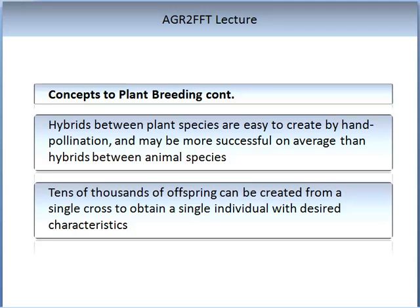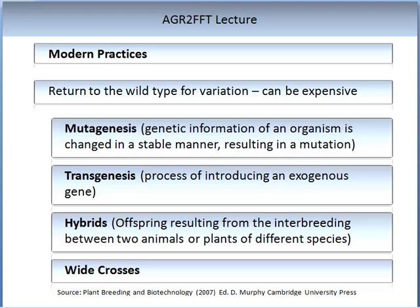Let us have a look at some of these modern practices. There isn't enough time to go into all areas of plant genetics in the detail I would like; however, we will have enough time to introduce some of these concepts. One of the first trends in recent genetics is a return to using wild type for variation — this is very time consuming and can be expensive, but does allow a new source of variation to enter the genetics. Mutagenesis is where genetic information of an organism is changed in a stable manner, resulting in a mutation. Transgenesis is the process of introducing an exogenous gene. Hybrids result from interbreeding between two animals or plants of different species. We also see the practices of wild crosses.